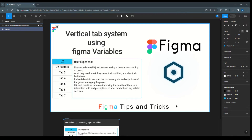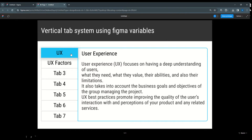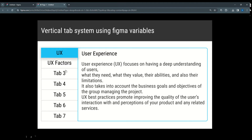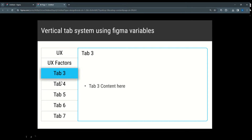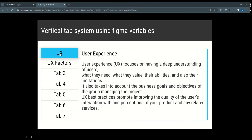Hello everyone, welcome to Figma tips and tricks tutorial. Today I am going to share a trick to create a vertical tab system using Figma variables. Here in the example I have different tabs: UX, UX factors, tab 3, tab 4 up to 7. While clicking on UX it shows the heading and description, and clicking on UX factor shows its related content.